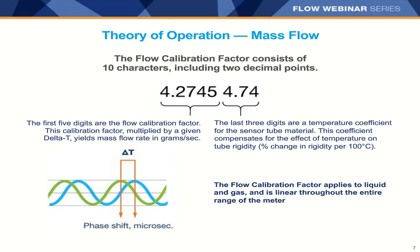The calibration factor and temperature coefficient change for different materials of construction. If we have materials like C22 alloy, titanium, or 316 stainless steel, that last three digits is characterized by the materials of construction.